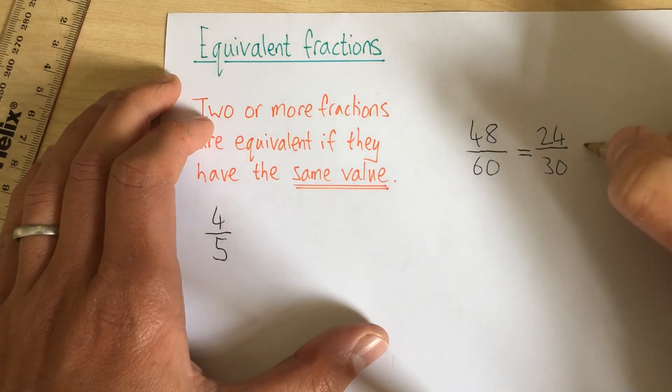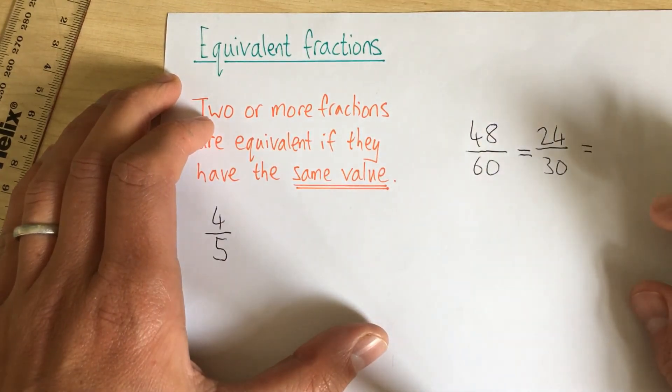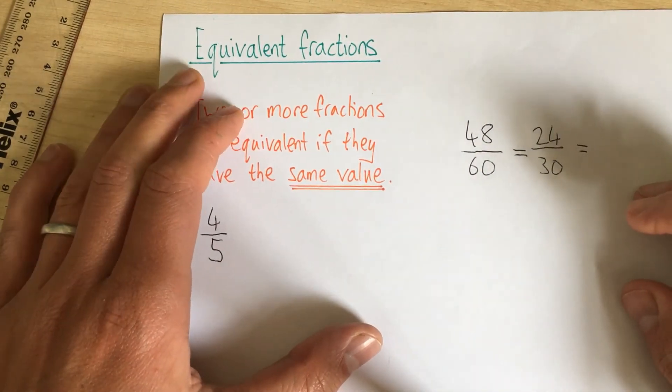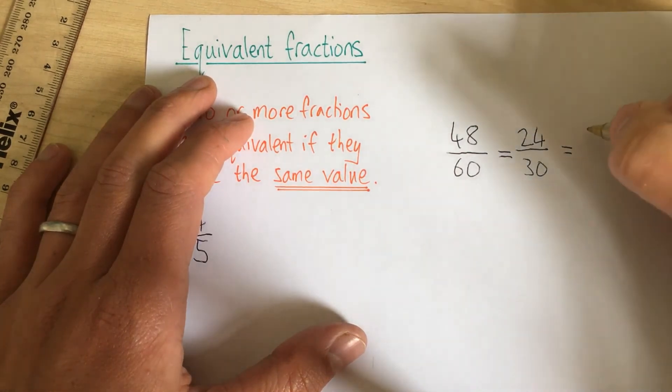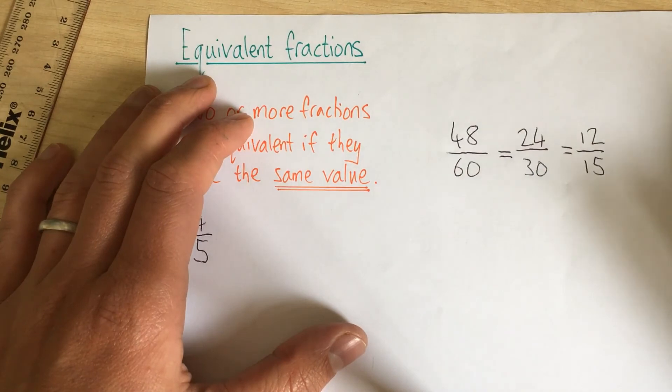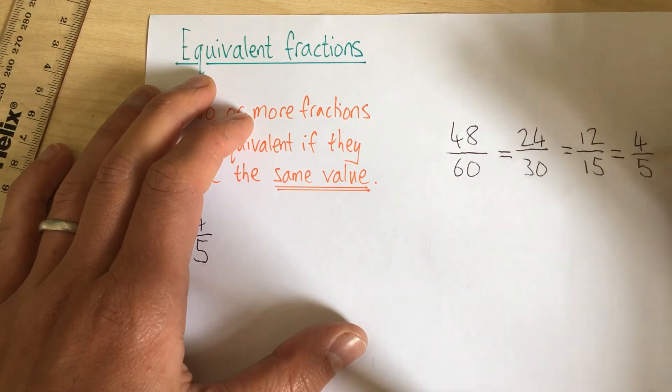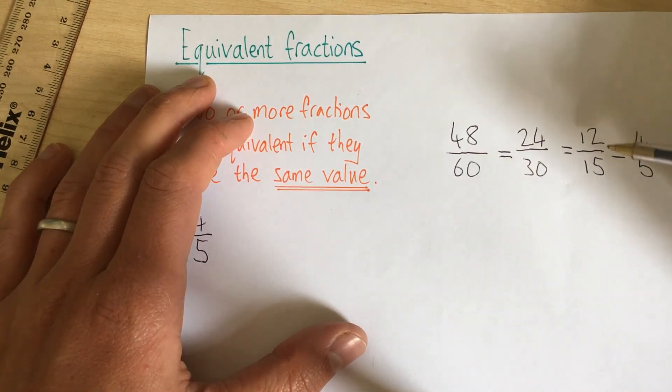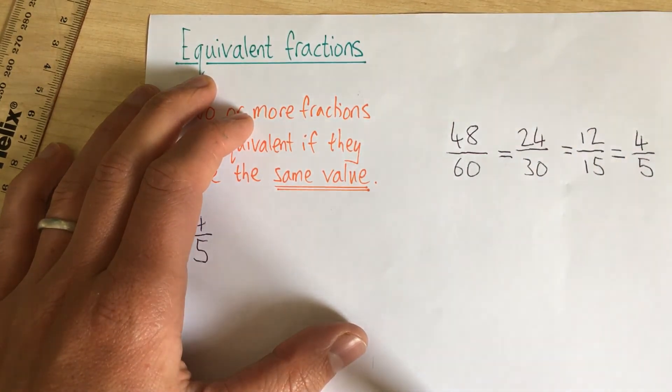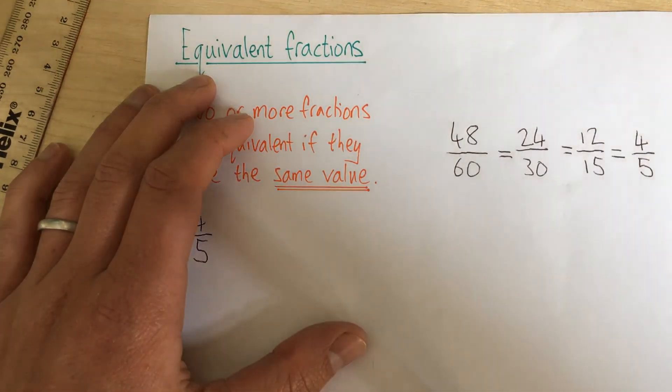Well, hang on, I can do that again. Two also goes into 24 and it goes into 30. So this is going to give me 12 over 15. And I already know this one, 12 over 15 is equal to four fifths. Because 12 and 15 can both be divided by three. That's equivalent fractions.